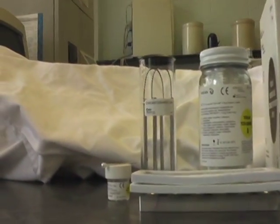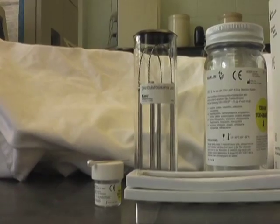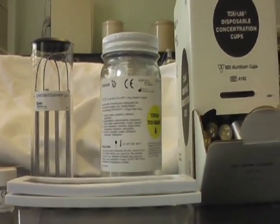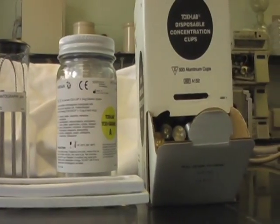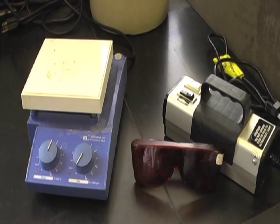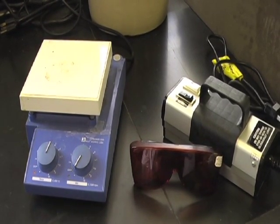This is the equipment used for a Toxilab. We have the Toxia discs, the Toxilab jar, the Toxichromatograms, the evaporating well plate, and the disposable wells. Here's more equipment used for the Toxilab: a heat plate and a UV light.